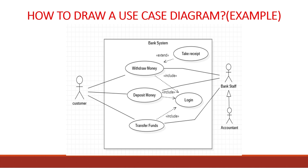There are also two actors on the right side of the system: bank staff and accountant. There is a generalization relationship between bank staff and accountant, meaning the accountant inherits some properties from bank staff. Both perform duties of the bank, so they share a generalization relationship.